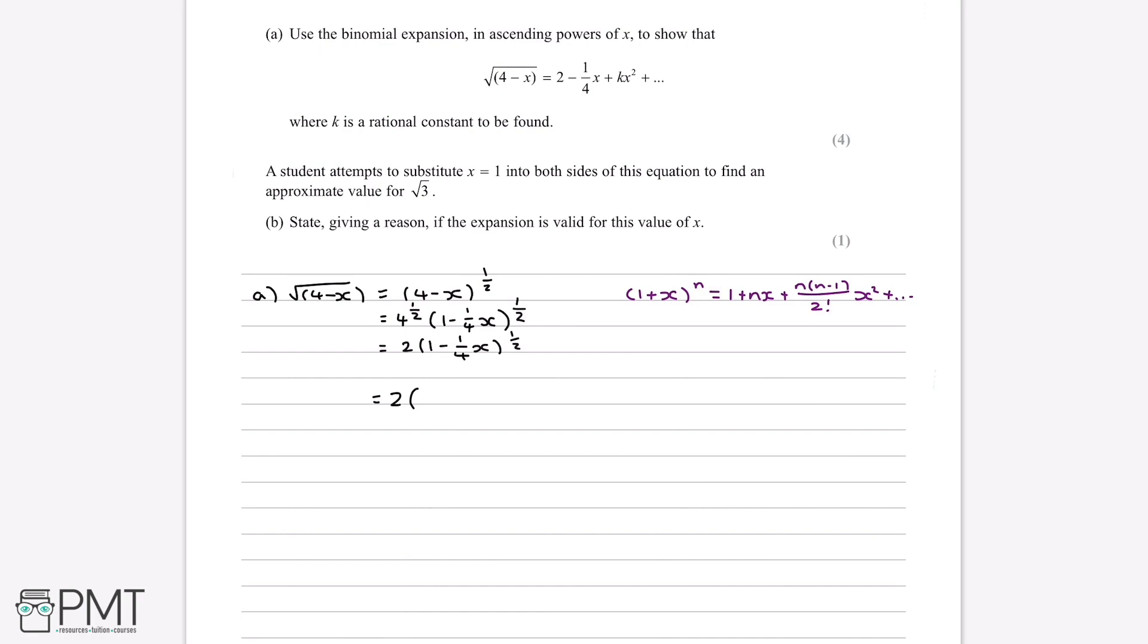we can say that 1 minus a quarter x to the power of a half expands out to 1 plus n, which is a half, multiplied by minus a quarter x, plus a half, multiplied by minus a half, over 2 factorial, and then multiply by minus a quarter x all squared, and it's important to remember it's all squared, and it's not just the x that's squared, plus etc, close bracket.